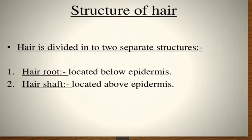Now the most important part: the structure of hair. Hair is basically divided into two main parts — the hair root and the hair shaft. Recalling from the last lecture on skin structure, the skin has three layers: epidermis, dermis, and hypodermis. The hair root is located below the epidermis, and the part above the epidermis is known as the hair shaft.